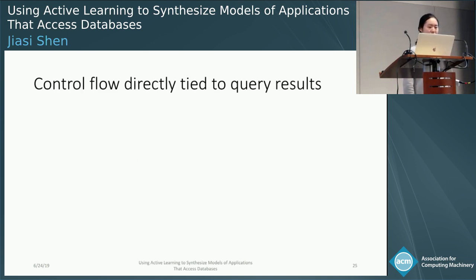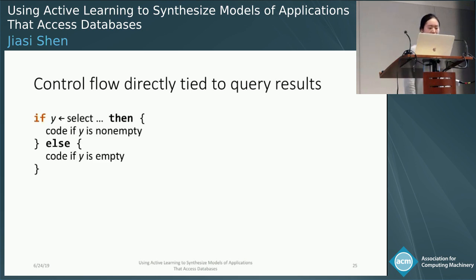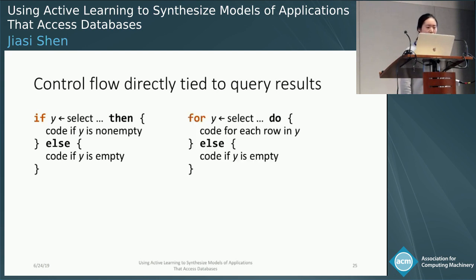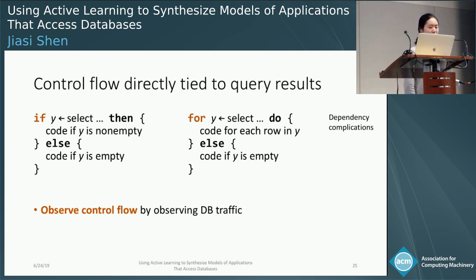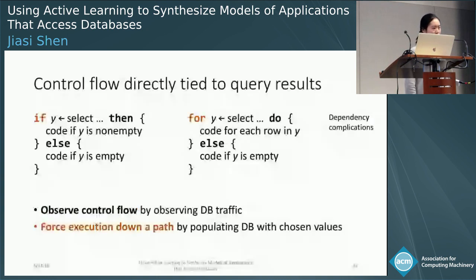The other key component of the DSL is the control flow. The control flow is directly tied to the query results. We allow two kinds of control logic. An if statement first performs a query to retrieve the data; if there's non-empty data, it enters the then branch, otherwise the else branch. A for loop first performs a query to retrieve data; if there's non-empty data, it performs the loop body once for each row; if there's no data, it enters the else branch. Because we directly tie the control flow to the queries and their results, we can observe the control flow just by looking at the database traffic. We can also force the program to execute down a certain path by populating the database with carefully chosen values so that certain queries retrieve certain numbers of rows.